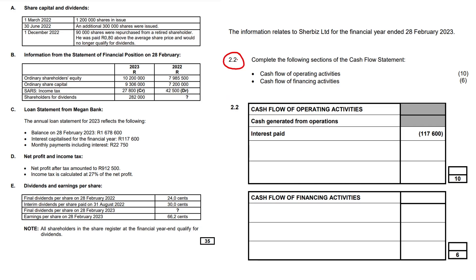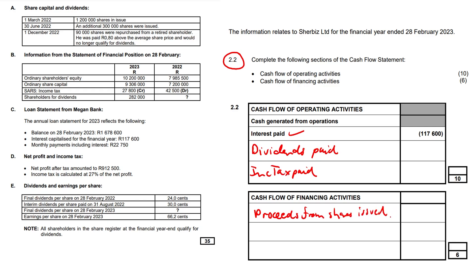For question 2.2, we need to complete the following sections of the cash flow statement. Interest paid has already been calculated and is in our answer booklet in bold, so we don't need to do anything there. We need to calculate dividends paid and income tax paid. For cash flow from financing activities, we need proceeds from shares issued (calculated in question 2.1), funds used to repurchase shares, and the change in loan amount.